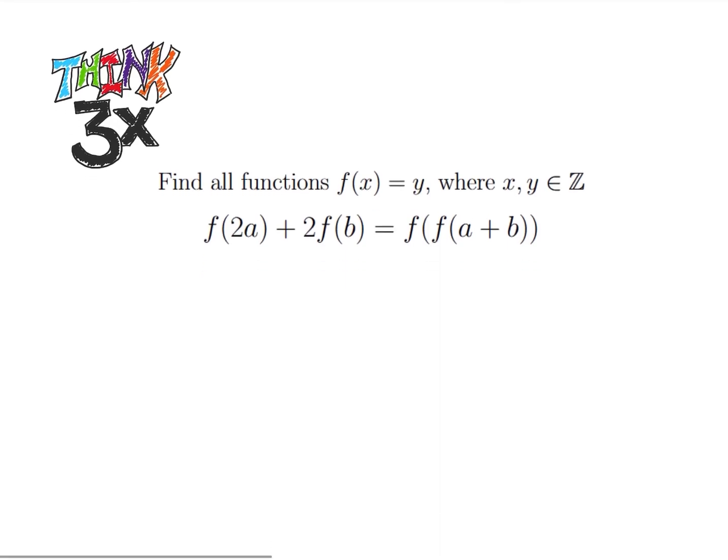Typically in these problems, the strategies we use often involve either taking inverses or looking at known points. So what we're going to do here is look at known points. Let's look at the point where a is equal to zero. So my function then becomes f of 0 plus 2f of b is equal to f of f of 0 plus b, which is just b.